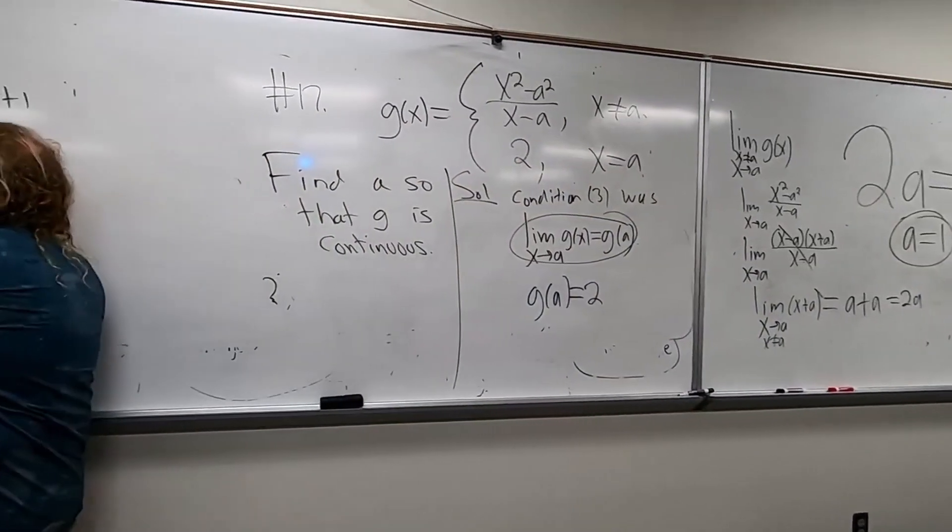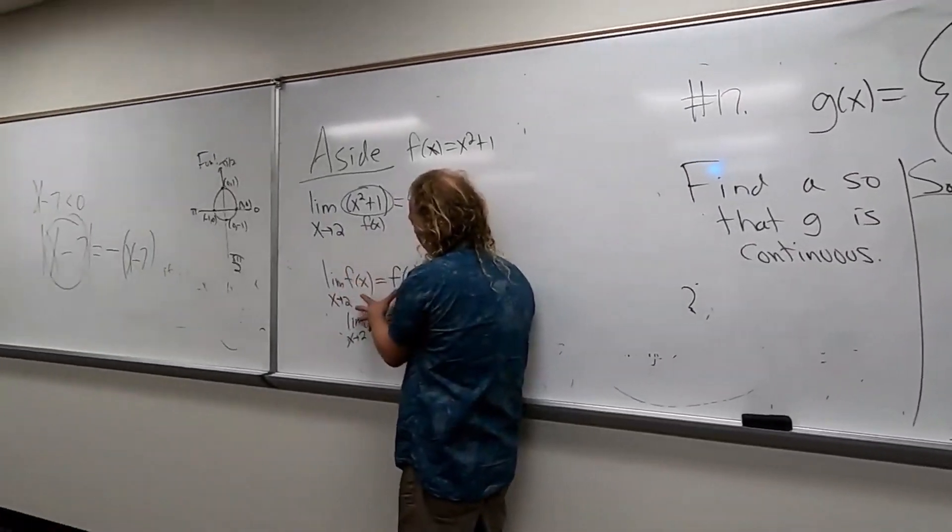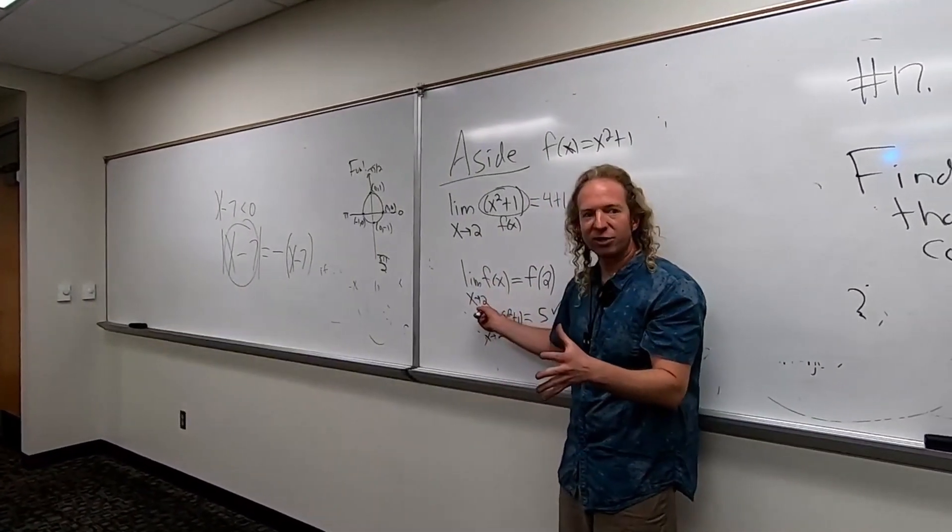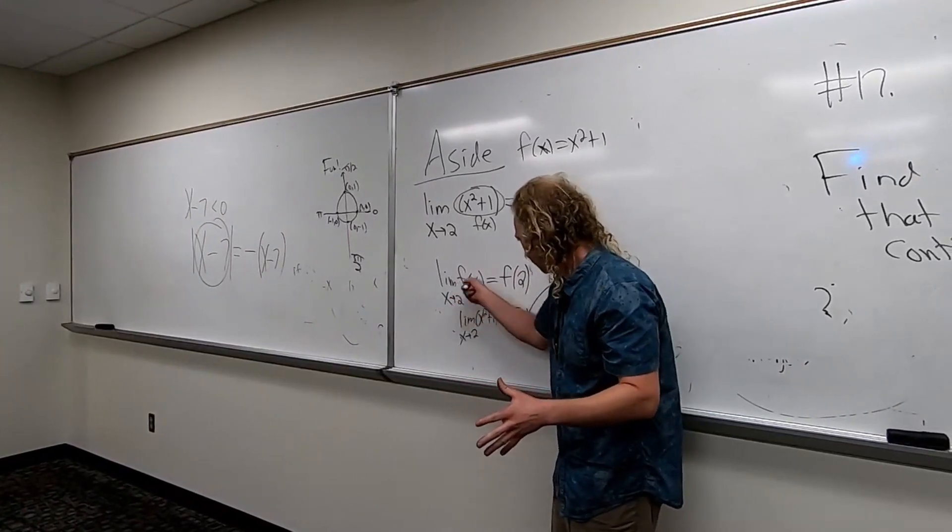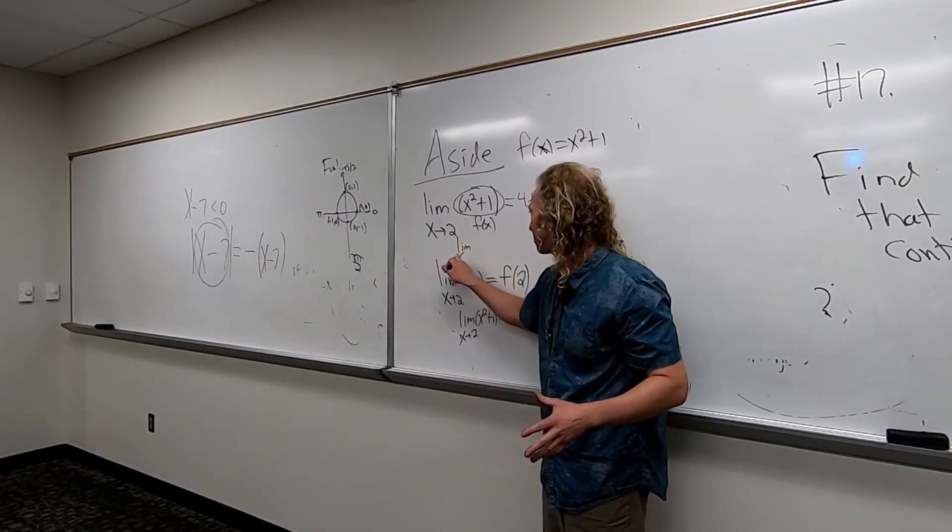So again, we plug in the number, we get 5. Think of the definition of continuity. This is what it means for a function to be continuous at 2. Because this is the regular definition, x approaches c. This is the definition of continuity at c.